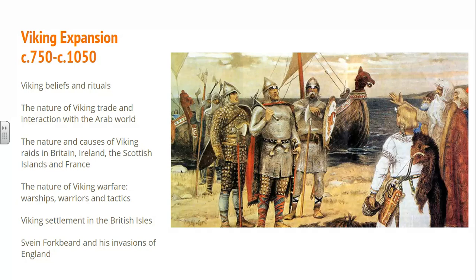We look at what they did as raiders and invaders — places like Britain, Ireland, Scotland and France — how they invaded and what they did when they got there. We also look at them as settlers, travelling and settling in different places like this country, but also getting to Iceland and as far away as North America. And we think about some of the different Viking kings, people like Forkbeard and Canute.